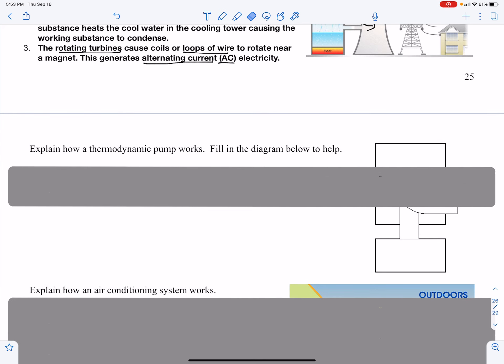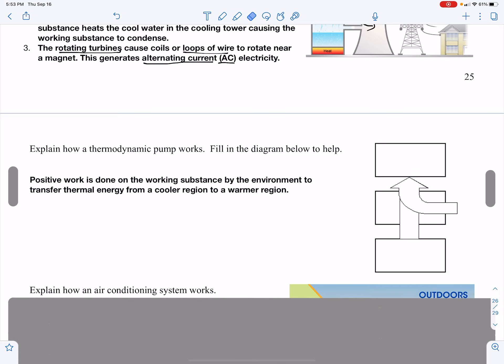Explain how a thermodynamic pump works. Fill out the diagram to help. A thermodynamic pump is exactly opposite from a thermodynamic engine. Instead of taking heat from a hot environment to do work and then exhausting heat to a lower environment, we do work to take heat from a lower temperature environment and bring it to a higher temperature environment. It's exactly the opposite.